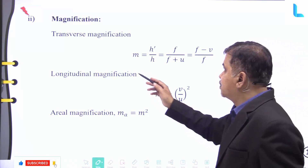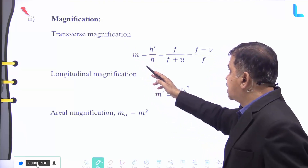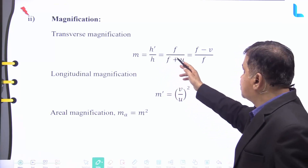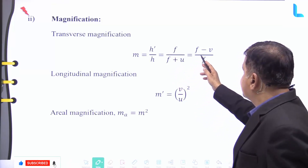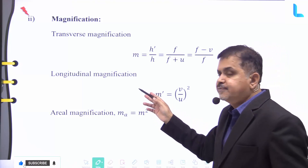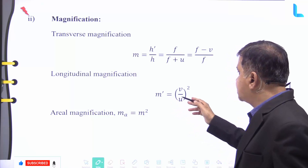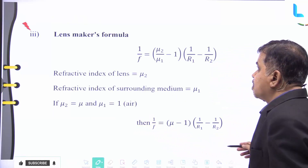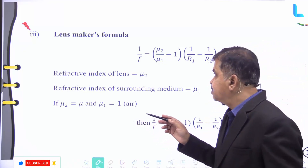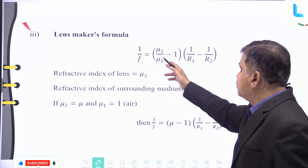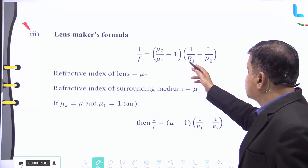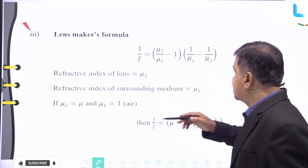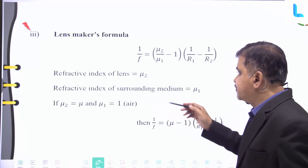For lens magnification, the transverse magnification m = h'/h = f/(f+u) = (f−v)/f. The longitudinal magnification is m' = (v/u)². For a real image, m_a = m². The lens maker's formula is 1/f = (μ₂/μ₁ − 1)(1/R₁ − 1/R₂), where μ₂ is the refractive index of the lens and μ₁ is that of the surrounding medium.